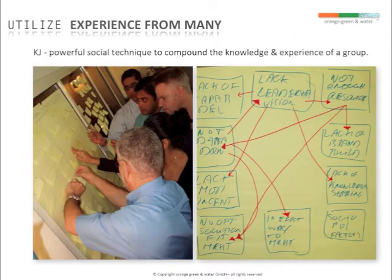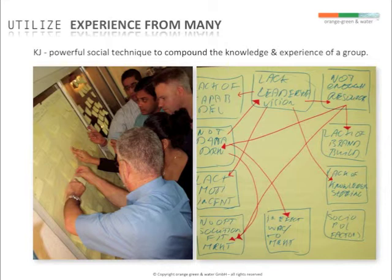KJ technique is a powerful social technique to compound the knowledge and experience of a group. This is not a clustering technique where software and computers can help — it has to be done by people.